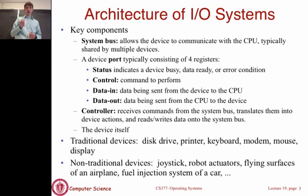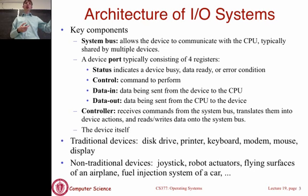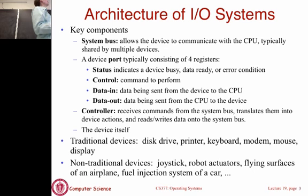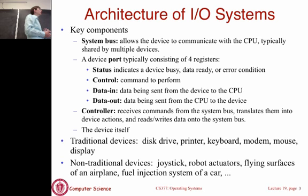Let's recall the main components of a machine. In our simplified picture, we have a CPU, memory, I/O devices, and a system bus connecting all of those. In general, a system bus allows multiple devices to communicate with the CPU, and it's going to be shared by lots of different devices.